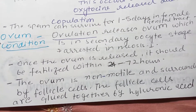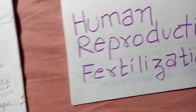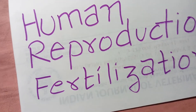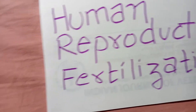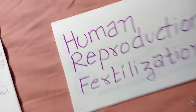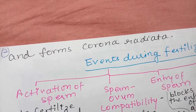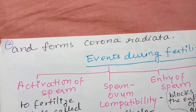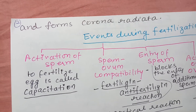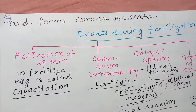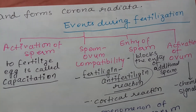The ovum is non-motile and surrounded by follicle cells. These follicle cells are glued together by hyaluronic acid, which is a kind of polysaccharide present as a cementing substance between the granulosa cells of the ovum. Together, these form the corona radiata, which is the outer membrane of the ovum.